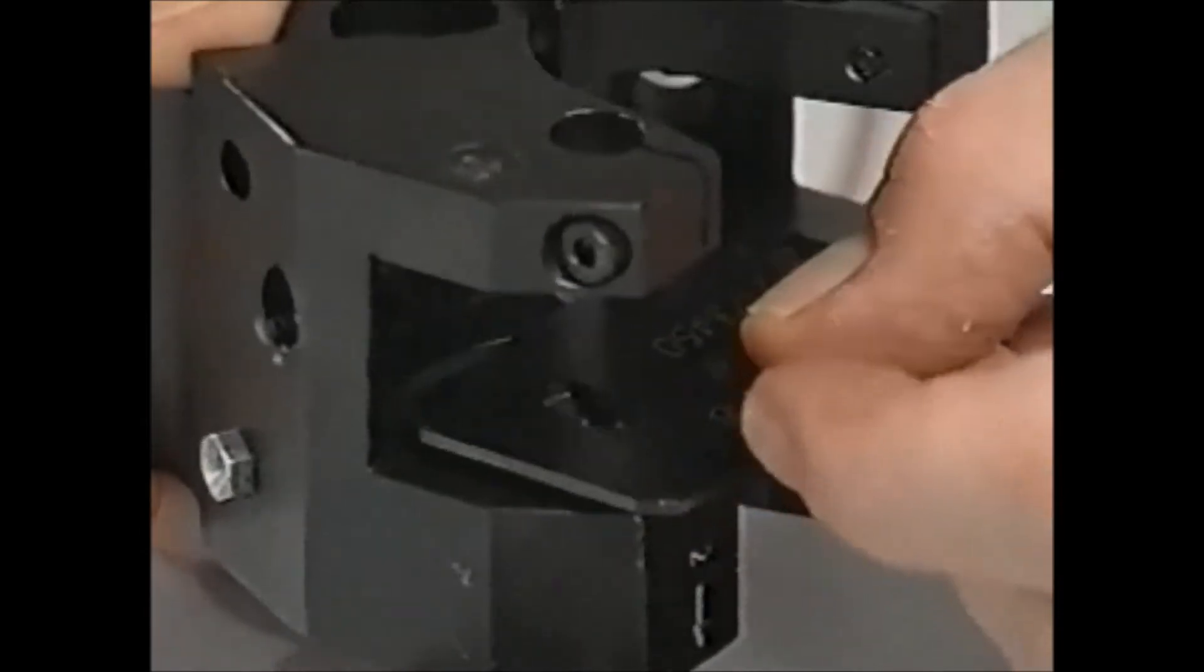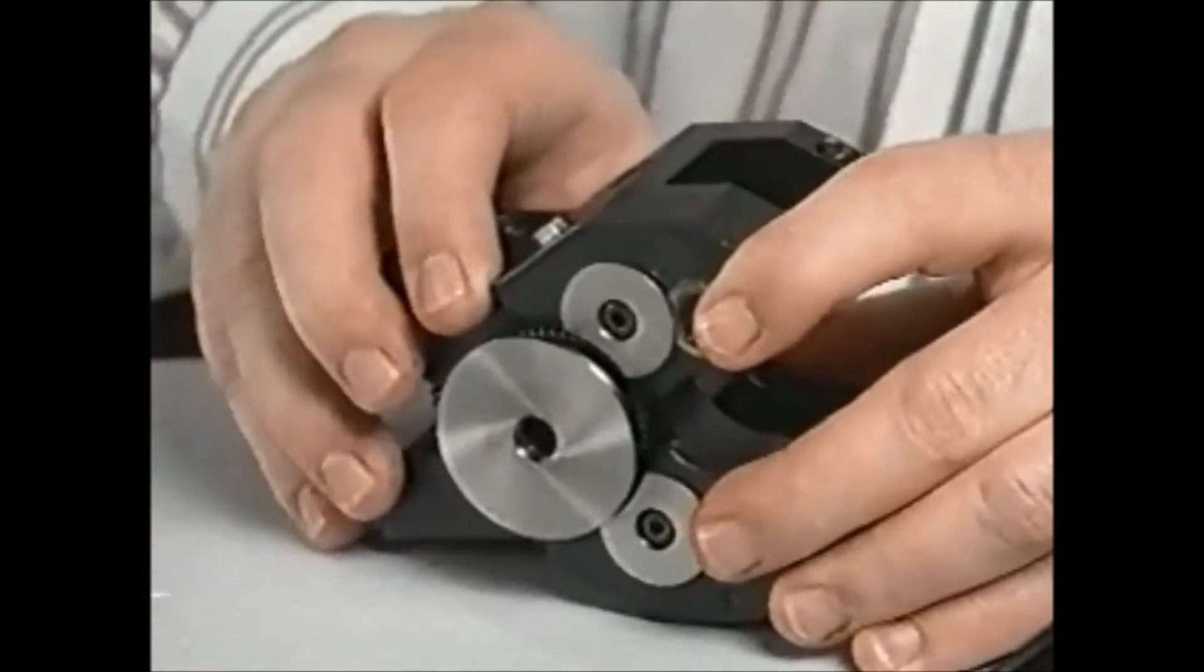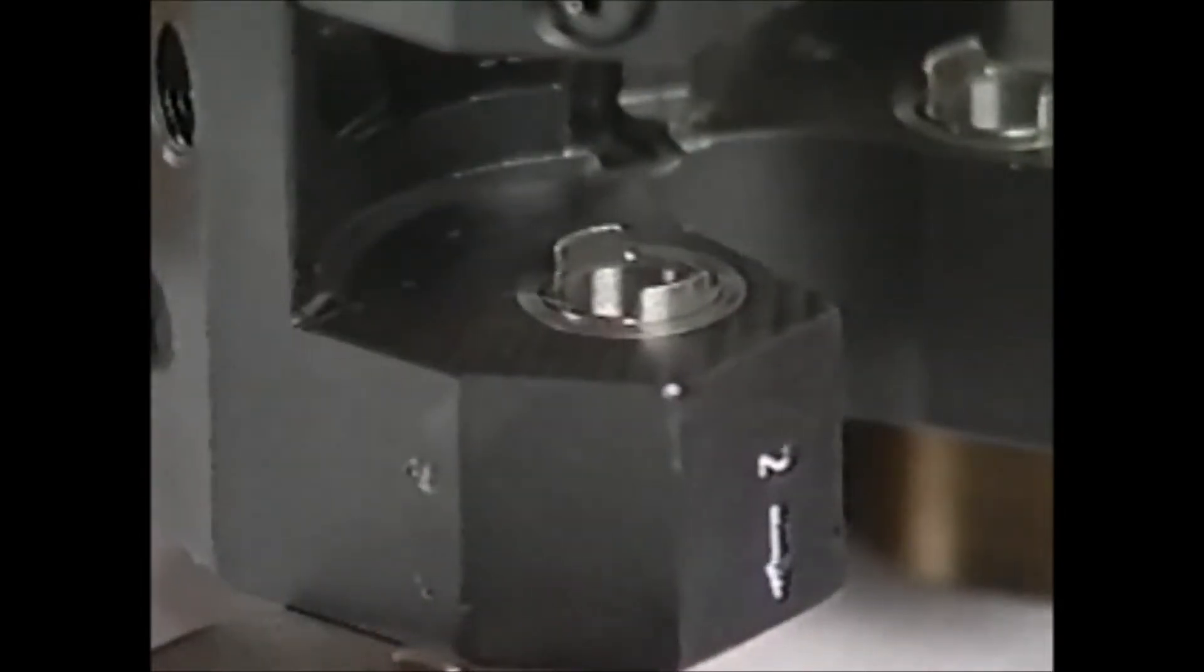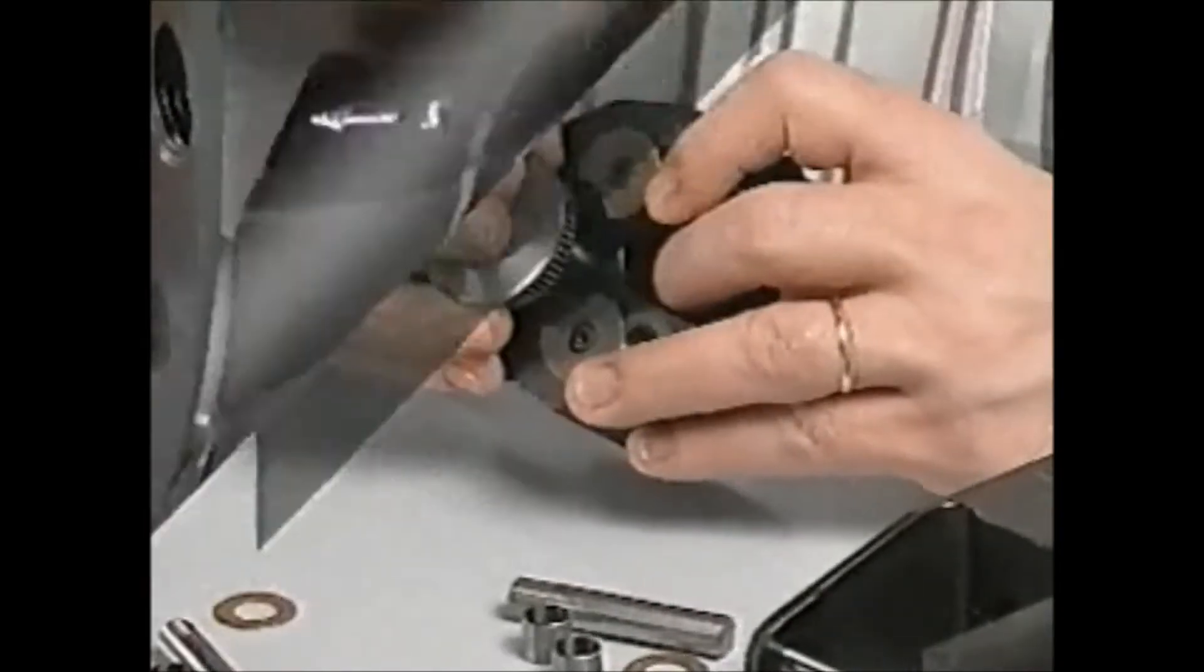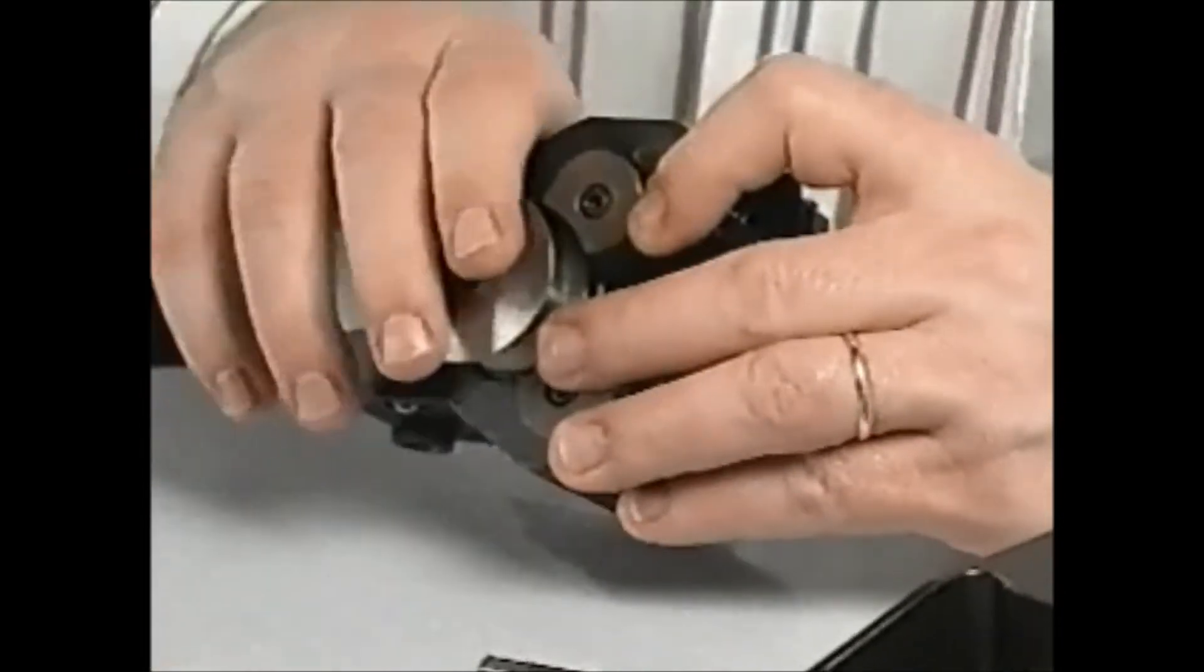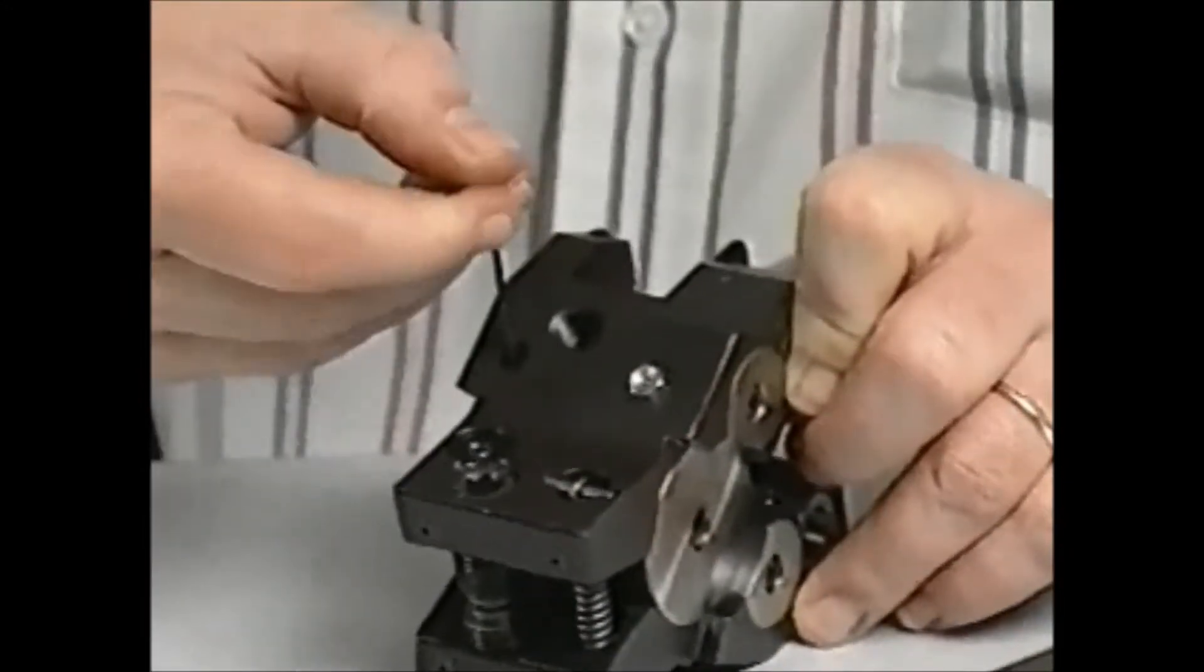If they are not, loosen the number 27 screw and remove the number 4 bushing. Remove the combined gears number 11 and number 12, then rotate the number 8 pinion until the drive lugs do fit the gauge. Reinstall the combined gears with number 11 entering the arm first. Replace the number 4 bushing and tighten the number 27 screw.